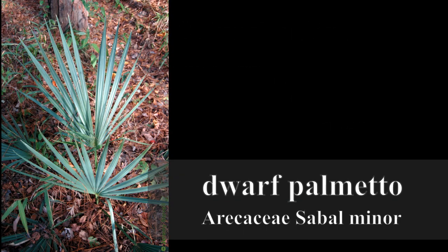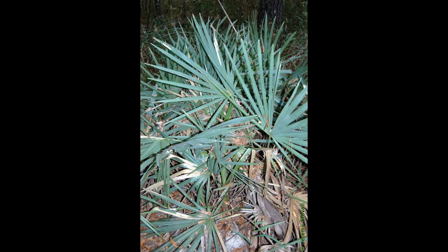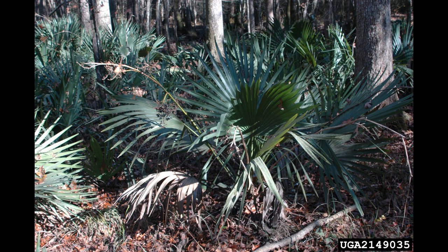Our first species is Arecaceae Sabal minor, the dwarf palmetto. Minor means small, and dwarf palmetto is a small palm tree. It's small enough that you rarely see a trunk — it mostly appears to be large fan palm-like leaves emerging from the ground. Dwarf palmetto is native from Oklahoma and East Texas east to Florida and up to North Carolina, so it's a southern coastal plain species. The leaves can be 1 to almost 6 feet in total length. It is a monocot, and one characteristic is those long strap-like leaves.